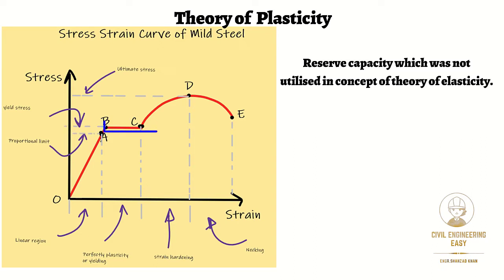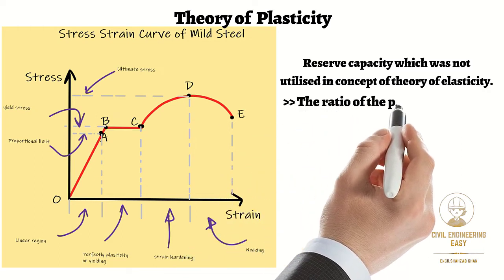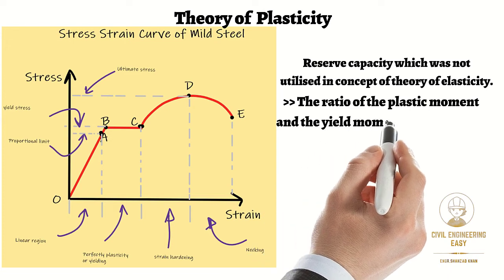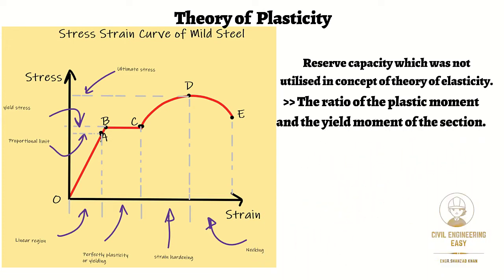Shape factor is defined as the ratio of the plastic moment and the yield moment of the section. It is a function of the cross section form and shape, and is represented by S. Mathematically, the shape factor is equal to the plastic moment divided by the yield moment.